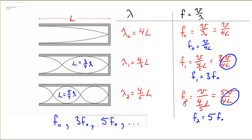And if we go to f2 and do the same procedure, f2 is velocity over wavelength, wavelength in this case being four-fifths L. Again, simplifying it, I get velocity is 5v over 4L, and lo and behold there's my v over 4L again, which is f0. So f2 is 5f0.